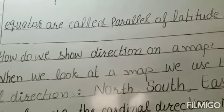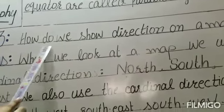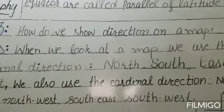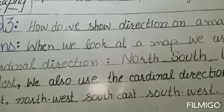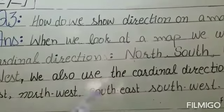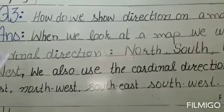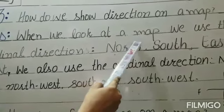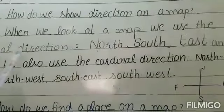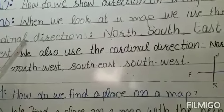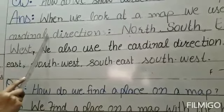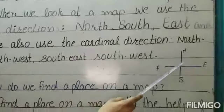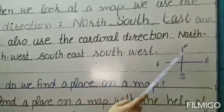Question number 3: How do we show direction on a map? When we look at a map, we use cardinal directions to determine which direction we are moving. The cardinal directions include north, south, and east.